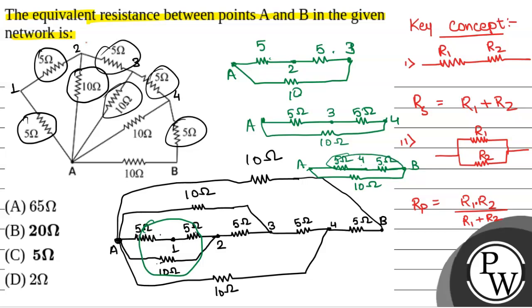So, R equivalent final between points A and B will be 5 ohm. So the correct option will be option C, 5 ohm. Hope you understood. Best of luck.